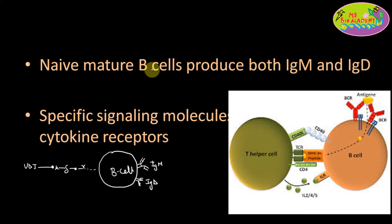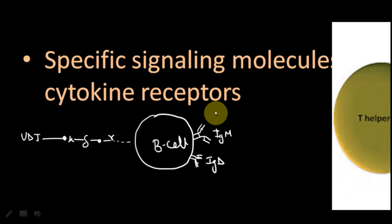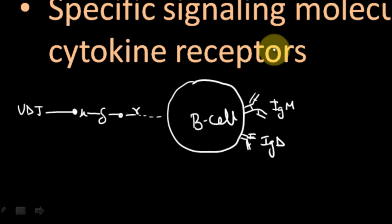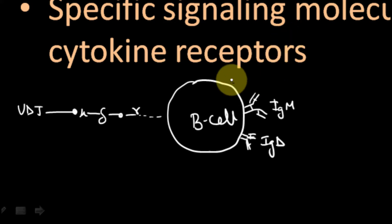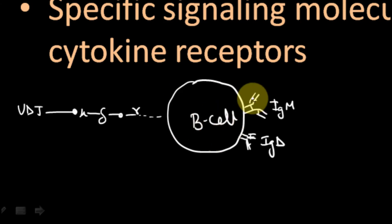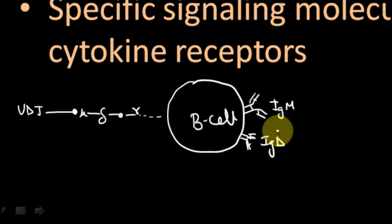Only the change in the constant region allows the antibody to interact with different effector molecules, thus helping in better clearance of the antigen. This is the concept of class switching. A naive mature B cell — meaning a mature B cell that has never encountered any antigen — is called a naive mature B cell.